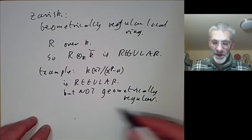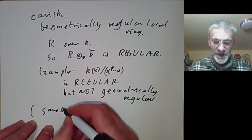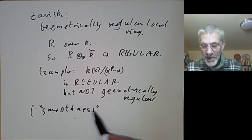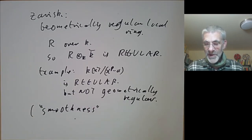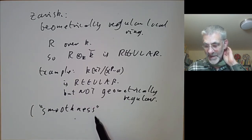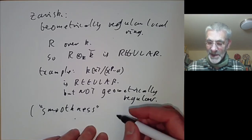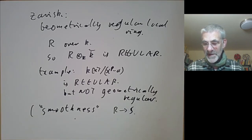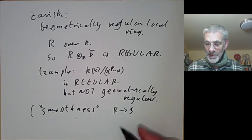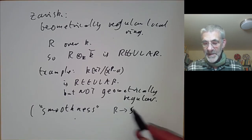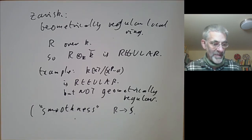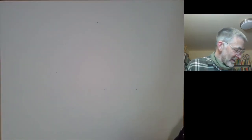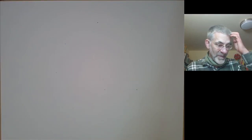There's a closely related concept called smoothness, which is related to rings being geometrically regular. This was introduced by Grothendieck, who has a more complicated concept of a map between rings R → S being smooth, and in the special case when R is a field this is related to the concept of being geometrically regular. I won't be discussing smoothness in this particular course.